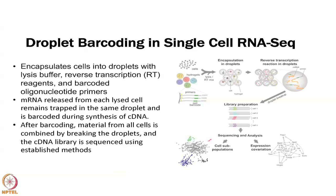One approach to single-cell RNA-seq is droplet barcoding. You take each cell and encapsulate it into a droplet containing lysis buffer and everything needed for library prep within that droplet. You lyse the cell, release the RNA, barcode it, perform cDNA synthesis, and get it ready for sequencing. Because it is barcoded, you know everything in that droplet comes from one cell. You then break the droplet and multiplex many cells together, pulling out each cell's data by barcode afterward.